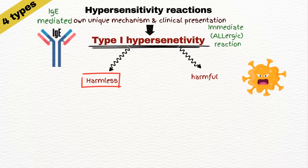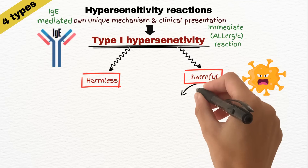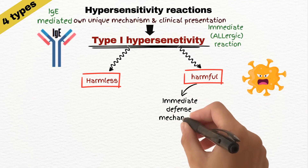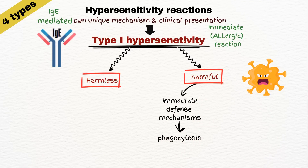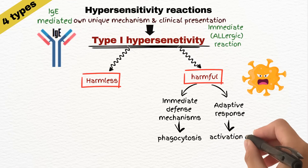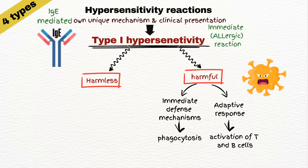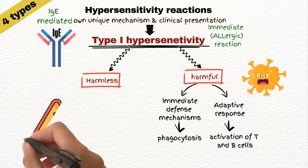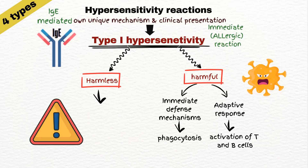If the substance is a pathogen, the immune system responds appropriately, either by immediate defense mechanisms like phagocytosis, or by a more specific response activating T and B cells to target and eliminate the pathogen. In contrast, if the substance is harmless but the immune system mistakenly identifies it as a threat, an allergic reaction may occur.